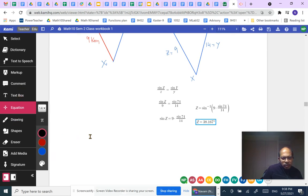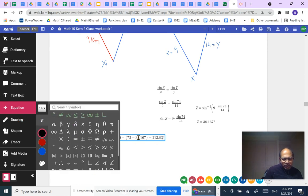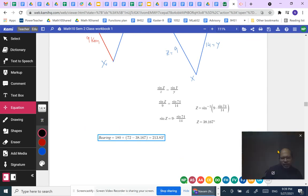So it's equal to 180 plus 72 minus 38.167. Notice that I'm not simplifying; we want to do that only at the very end. So this answer comes to be 213.83 degrees and this is the required bearing. Remember to give your answers to two decimal places if not asked otherwise.